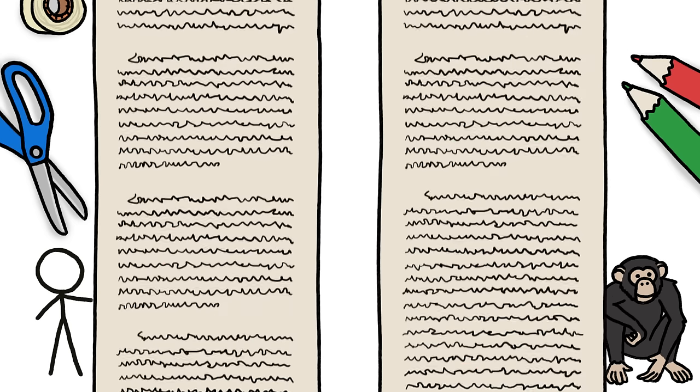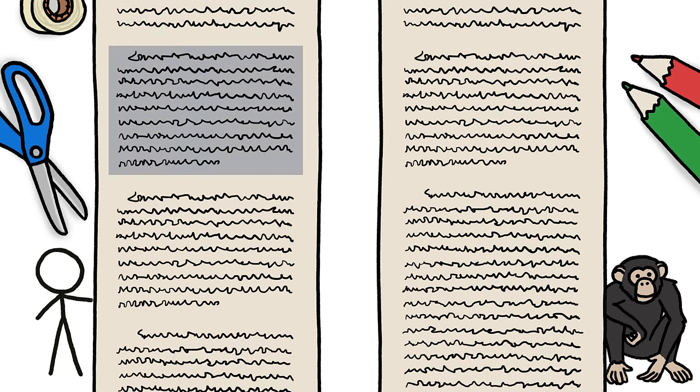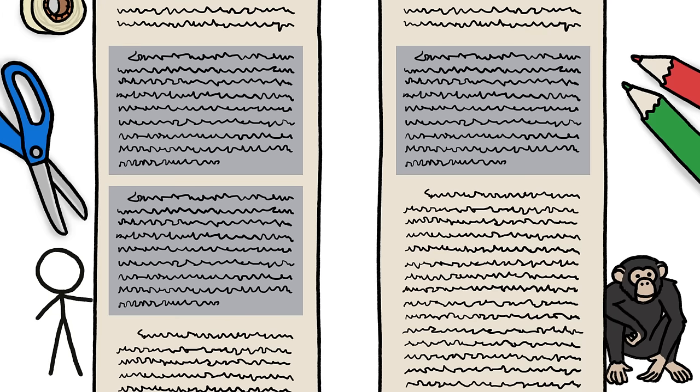For example, if a genetic paragraph thousands of letters long appears twice in a human scroll, but only once in its chimp counterpart, should that second human copy count as thousands of changes, or just one?